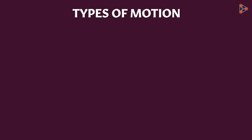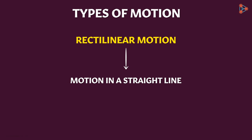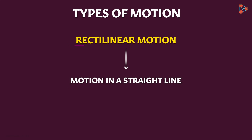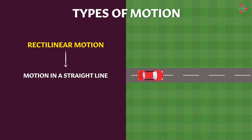Let's discuss the different types of motion. The simplest type is called rectilinear motion. Notice that there is a word 'line' in there — we define this type of motion as motion in a straight line. So if an object is moving along a straight line path, we say it's performing rectilinear motion. For example, when a car is moving in a straight line on a straight road, it's performing rectilinear motion.